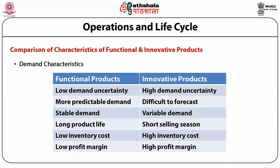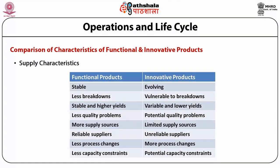Comparing the characteristics of functional and innovative products in terms of demand: functional products carry low demand uncertainty, whereas innovative products have high demand uncertainty. Functional products carry more predictable demand; innovative products are difficult to forecast. Functional products are stable in terms of demand; demand of innovative products varies over time. Functional products have long product life cycles whereas innovative products have shorter life cycles. Functional products carry low inventory cost; innovative products carry high inventory cost. Functional products have low profit margins; innovative products have high profit margins.